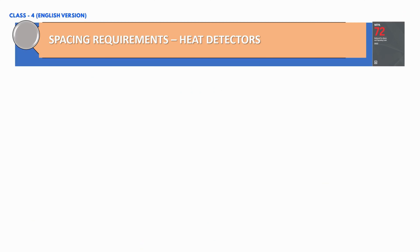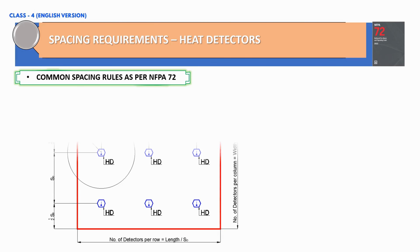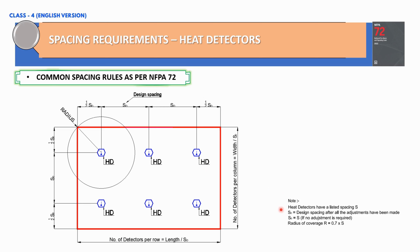NFPA 72 defines common spacing rules for heat detectors. As you can see on your screen, I have extracted NFPA 72 references and developed this figure. On the right-hand side you can see the most important notes to consider before distributing heat detectors in any room. Heat detectors have a listed spacing which can be denoted by S.